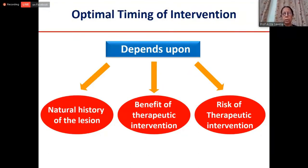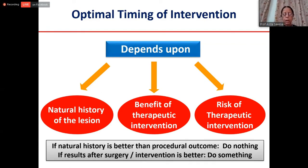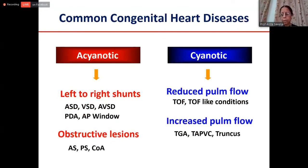When we talk of timing of intervention, we must take three things into consideration: the natural history of the lesion, whether there is benefit of doing an intervention, and what is the risk of that intervention. If the natural history is better than the procedural outcome — a classical example being VSD, where VSDs may close spontaneously — we should not necessarily intervene. I'm going to take up common congenital heart diseases: the acyanotic group of left-to-right shunts, obstructive lesions, and the cyanotic group.